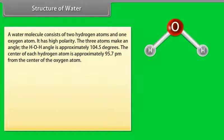Structure of water: A water molecule consists of two hydrogen atoms and one oxygen atom. It has high polarity. The three atoms make an angle. The H-O-H angle is approximately 104.5 degrees. The center of each hydrogen atom is approximately 95.7 picometers from the center of the oxygen atom.